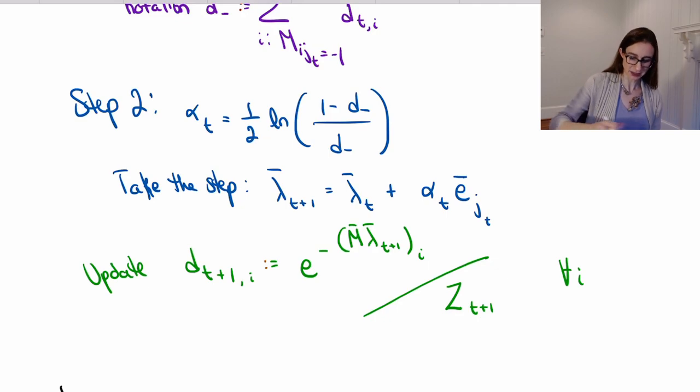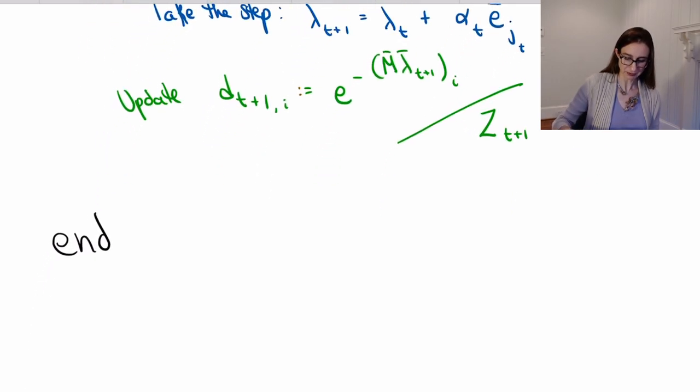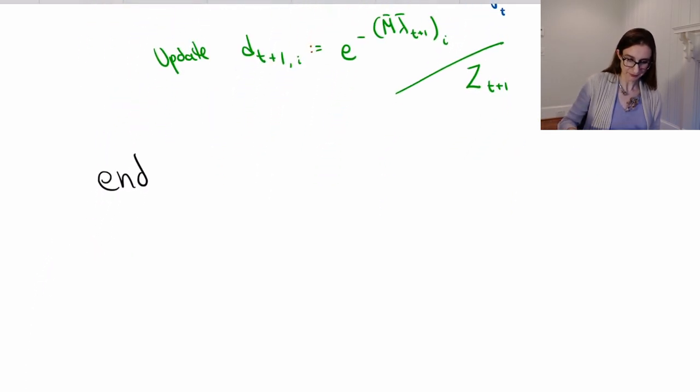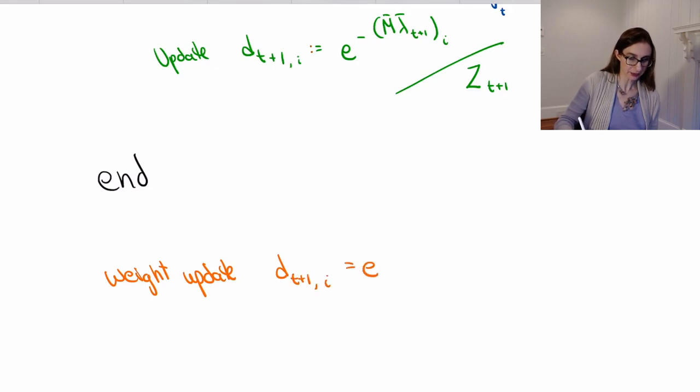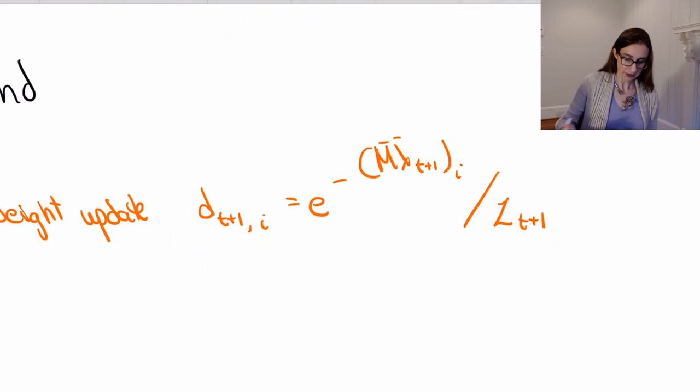Okay, so let's try to resolve what's going on there. Let's talk about the weight update. I'm just going to write this down here again: dt+1,i equals e to the negative m lambda t+1,i, and then of course all the weights get renormalized.